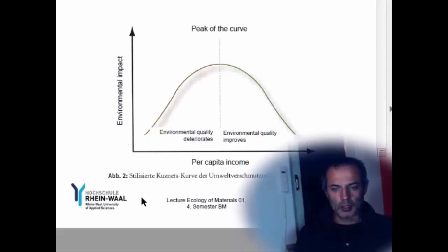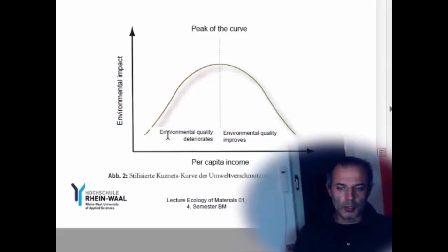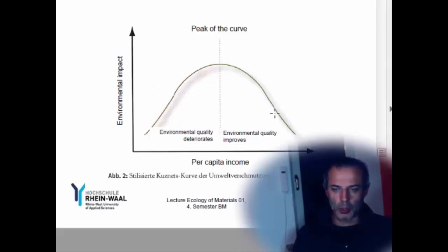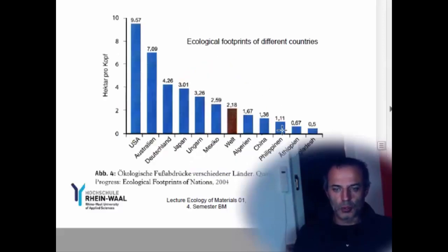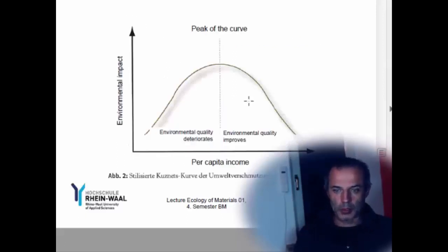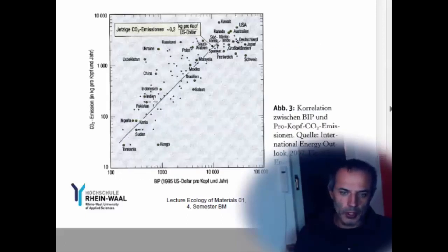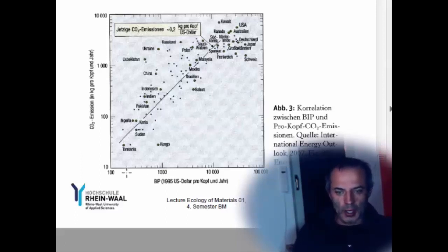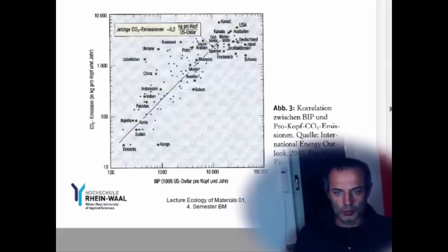What they predict here is that as we get richer and richer per person, we will get worse and worse, causing more and more impact, and then it will get better and better. This is sort of true, although if we look here, not really — because America is one of the richest and still uses the most land per person. Looking at the amount of carbon dioxide emission per person per year versus income, you see that it doesn't really come down; it's more of a straight line.